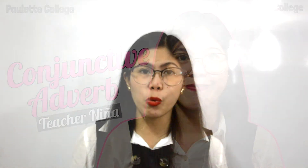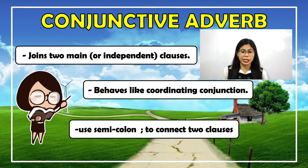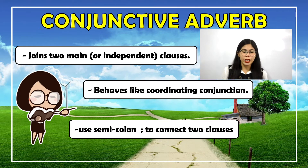Good day. In today's lesson we will be dealing with conjunctive adverbs. A conjunctive adverb joins two main clauses or two independent clauses. An independent clause has a subject and a verb and expresses a complete thought. Typically adverbs modify verbs, adjectives, and other adverbs. Conjunctive adverbs, however, are used to modify two independent clauses and join them together, behaving more like coordinating conjunctions. They use the second clause to modify or describe the first clause like an adverb.